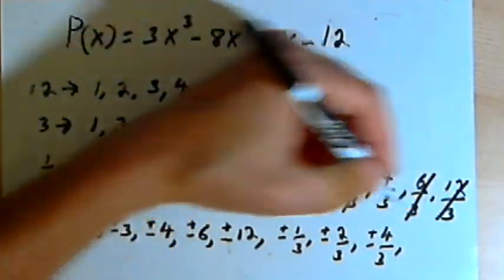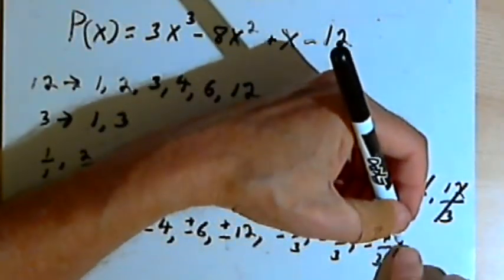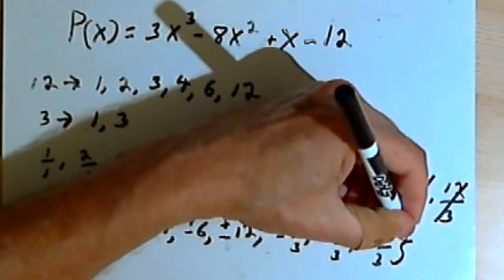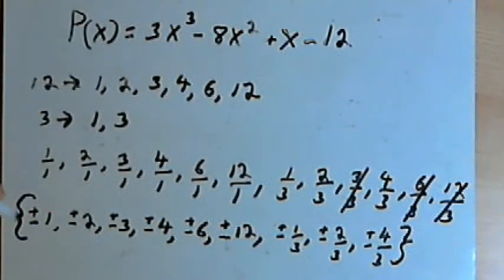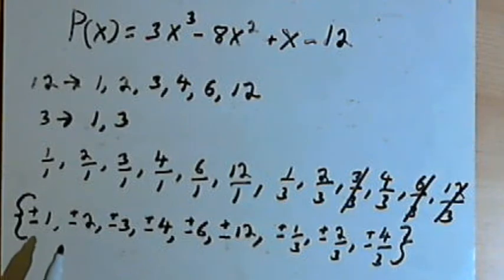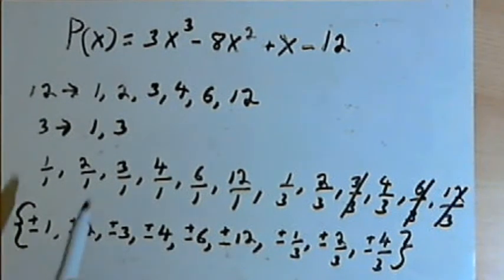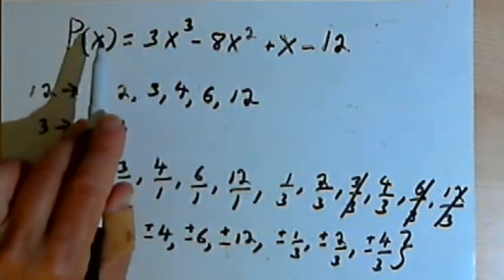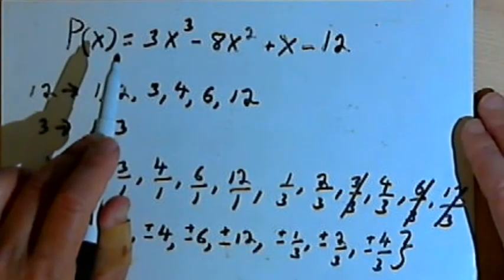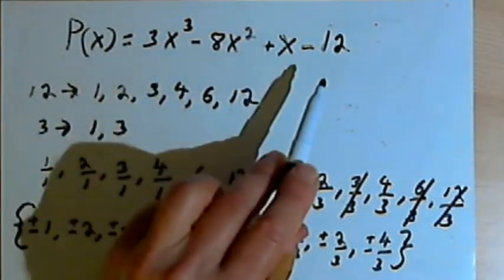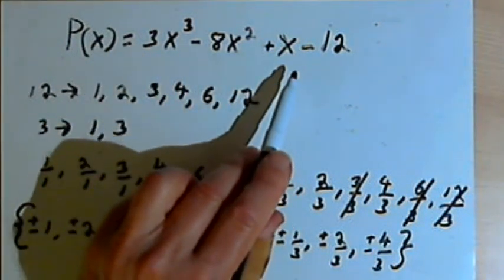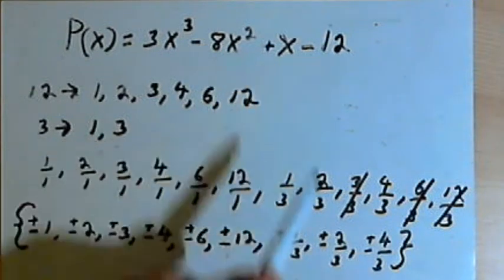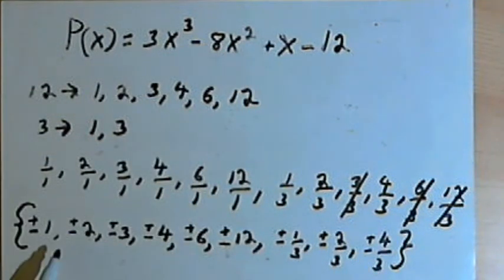So now what I've got here is the set of all possible rational roots or rational zeros for this original polynomial. The polynomial might not have any rational roots, but if it does have any, I'll be able to find them in this list.